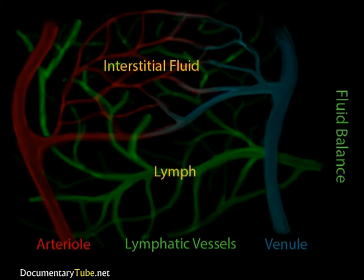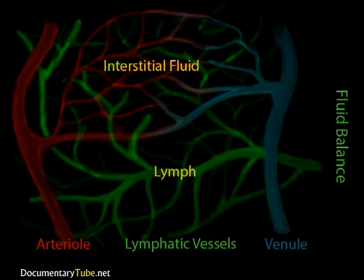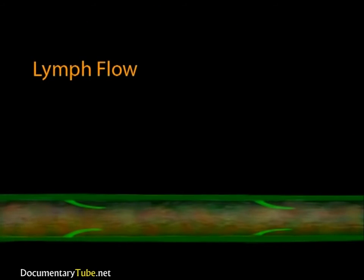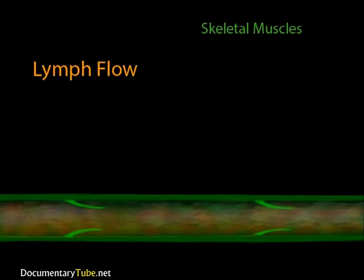These vessels eventually deliver the lymph to locations where the lymph can be cleansed of debris and checked for the presence of pathogenic organisms. How it gets the lymph there is pretty amazing. There is no heart for this system of vessels to pump the lymph around. So how does lymph get to the locations it needs to be delivered to? The lymph moves through your body when you move your skeletal muscles. The contraction of skeletal muscles squeezes the nearby lymph vessels, pumping them.